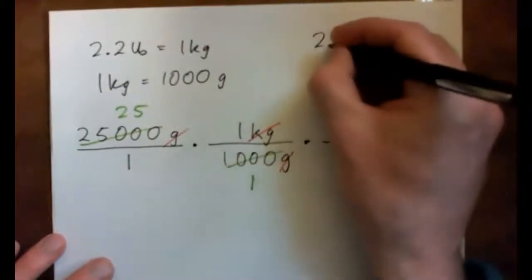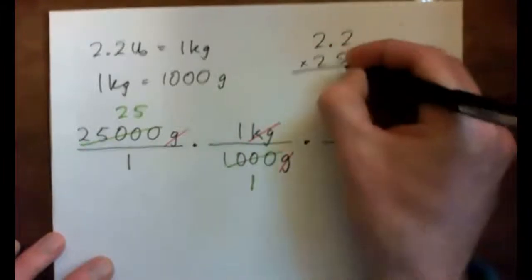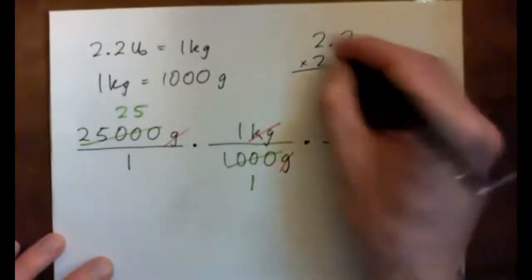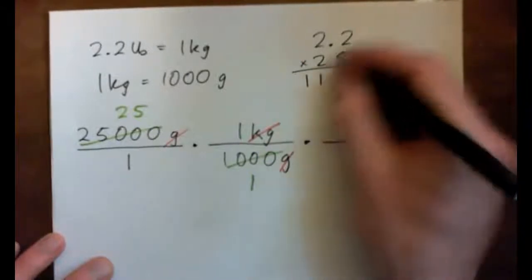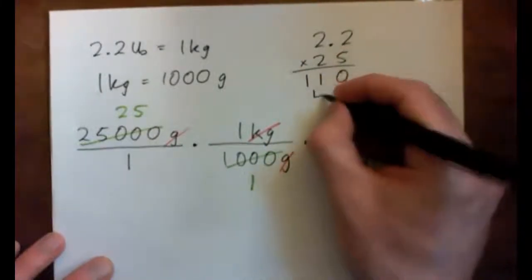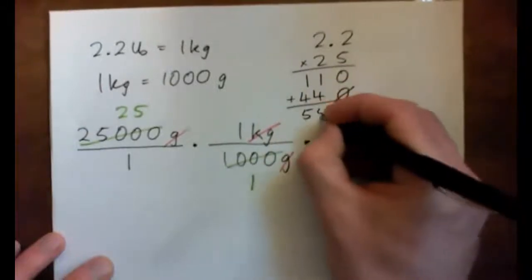So it's 25 times 2.2. I'm going to do that without the calculator. 2.2, 25. 5 times 2 is 10, carry 1. 5 times 2 is 10, 1 is 11. 10 is 0. Multiply by 2. 2 times 2 is 4. 2 times 2 is 4. And I get 5, 5, 0.